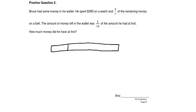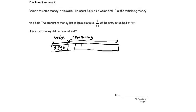390 dollars on a watch. Five-sevenths of the remaining — the remaining is over here. Out of the remaining you need to cut into seven parts: one, two, three, four, five, six, seven. One, two, three, four, five of these parts you spend on a belt. This must be the amount of money that's left after spending on the watch and belt.